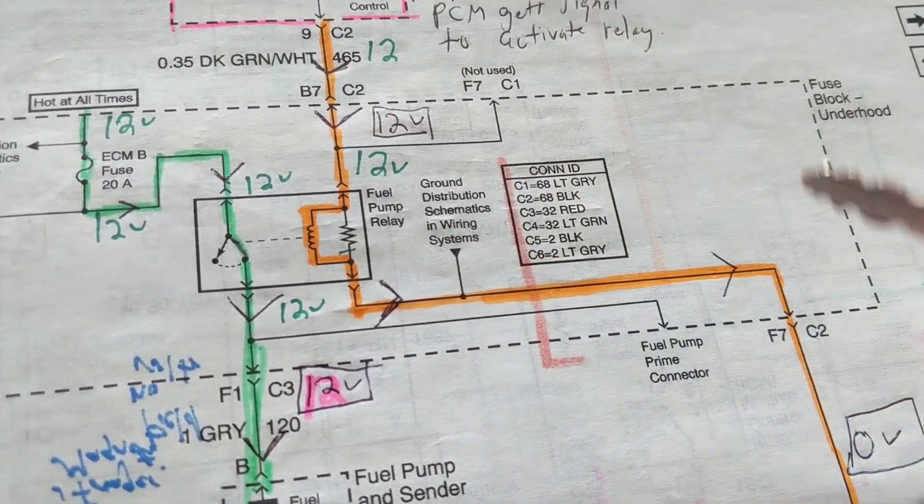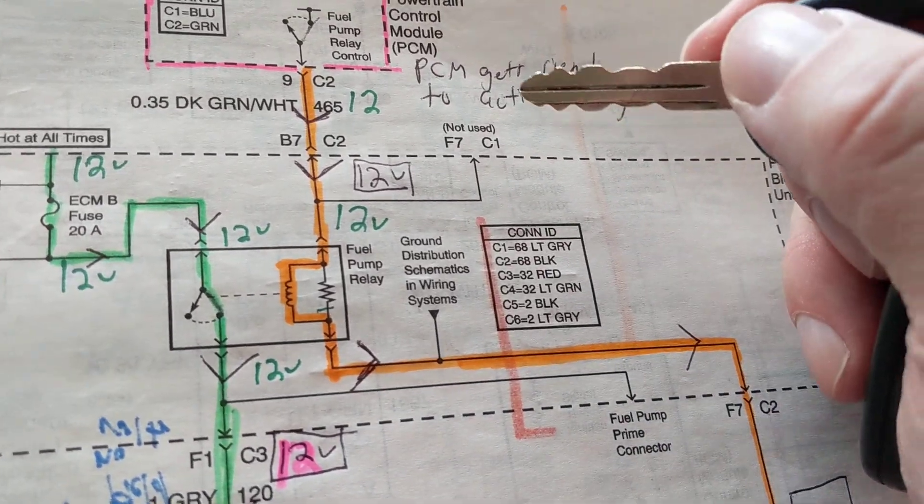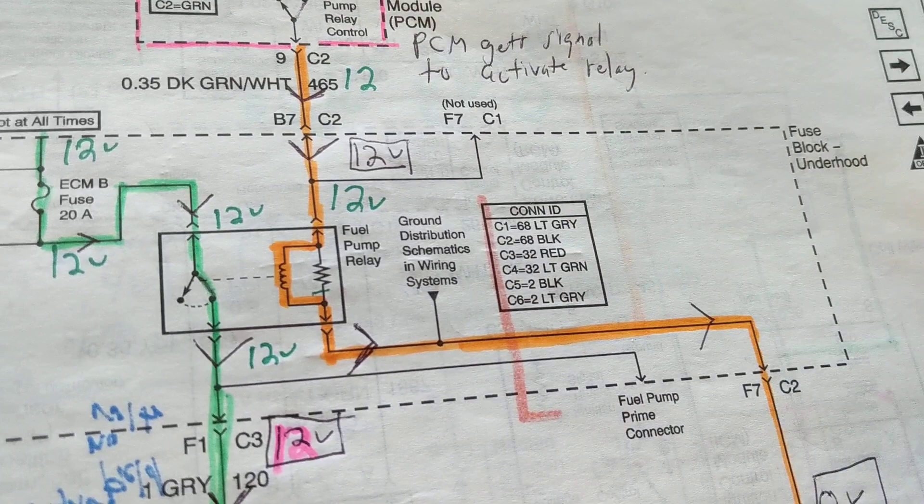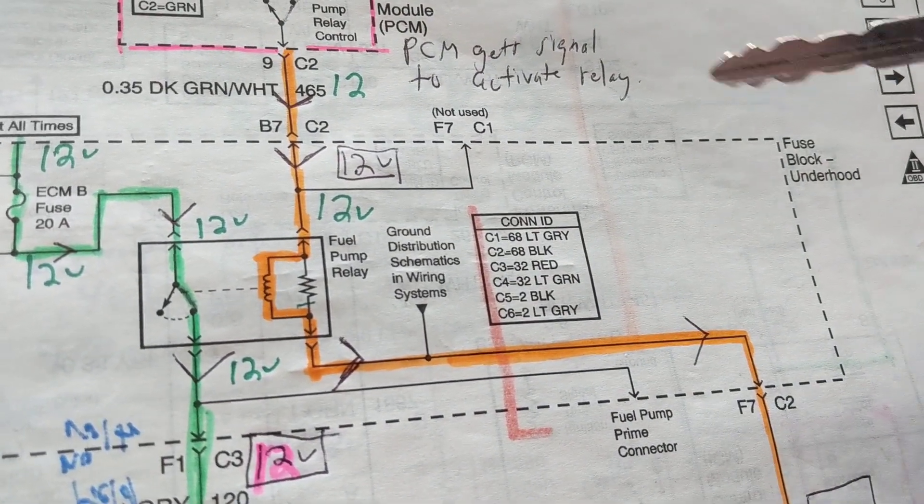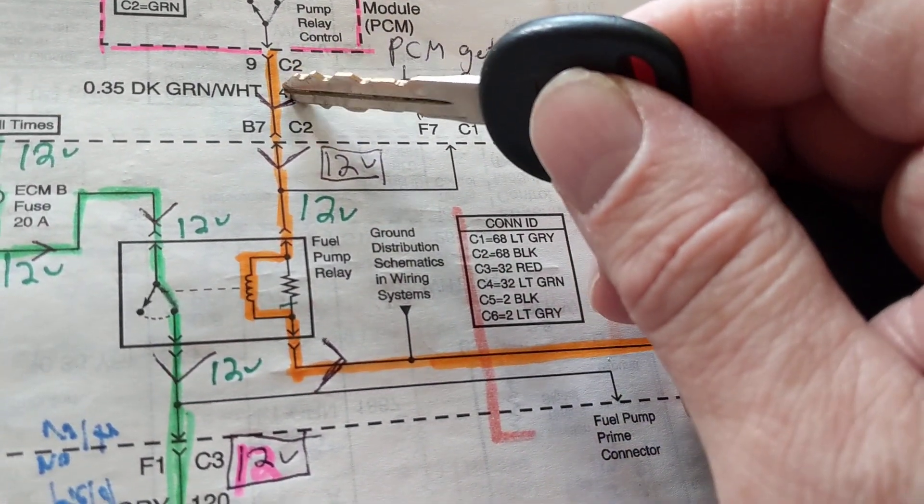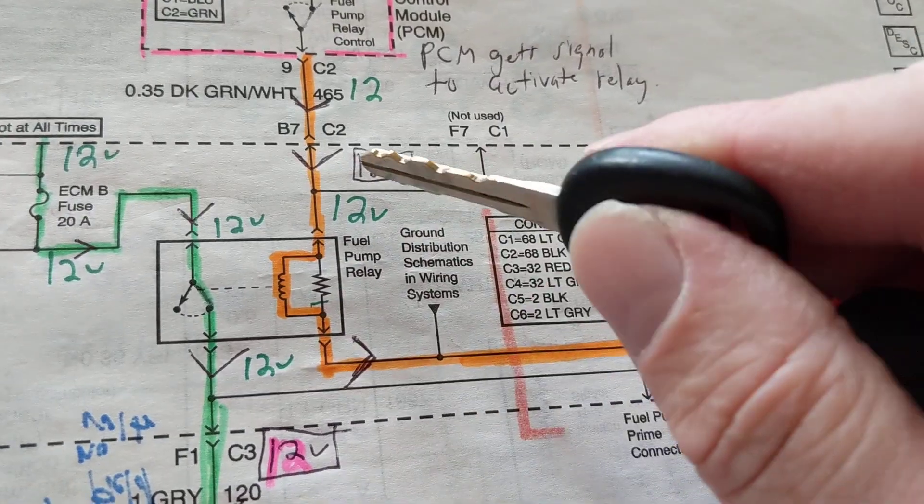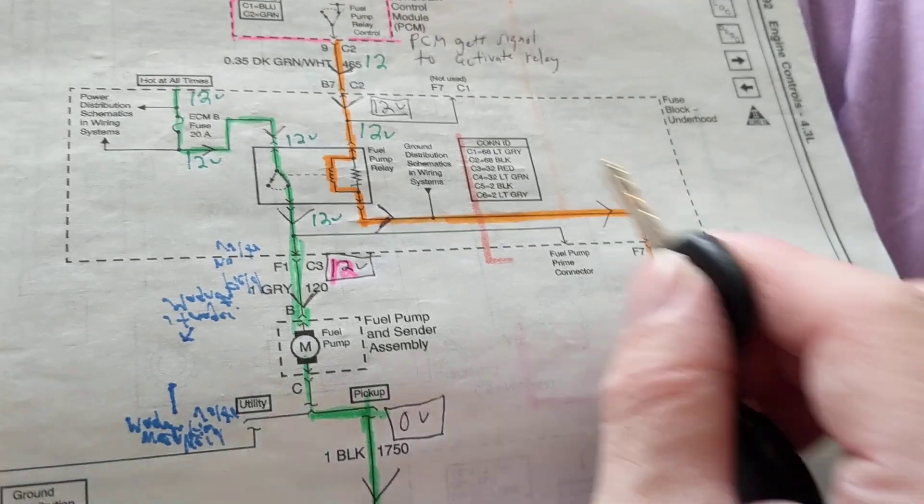What about the PCM? What about the BCM? What about the anti-theft deterrent system? What about the key? You're left with too many variables. As soon as you give 12 volts over here, what will happen? This will turn on and this should turn on in one shot. You know all this is good.